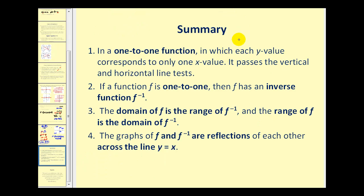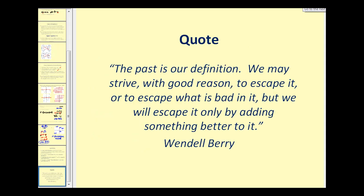Let's summarize. In a one-to-one function, each y value corresponds to only one x value, and the function passes both the vertical and horizontal line tests. If a function f is one-to-one, then it has an inverse function. The domain of f is the range of f inverse, and the range of f is the domain of f inverse — because we interchange the x and y variables. The graphs of f and f inverse are reflections of each other across the line y equals x. I hope you found this video helpful. Thank you for watching.